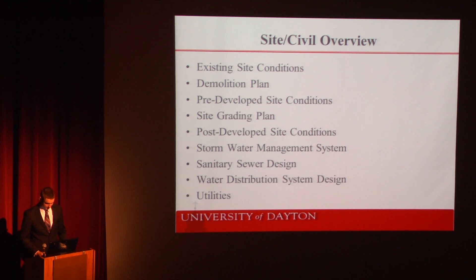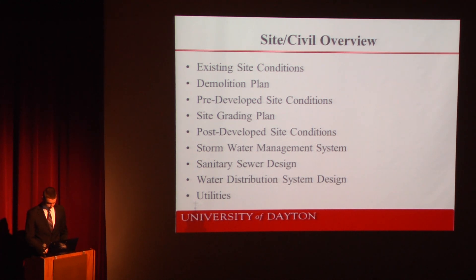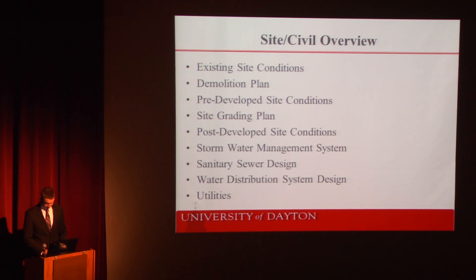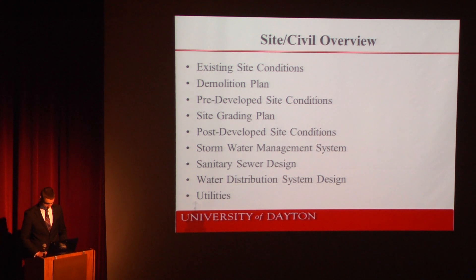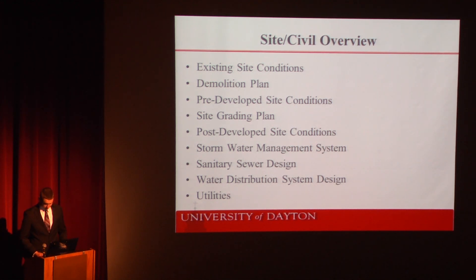The site civil team is responsible for aspects of the project that have to do with site development. We're responsible for examining the site conditions and determining the work needed. A demolition plan evaluates structures that need to be removed and relocated. Pre-developed site conditions are evaluated to determine initial rainfall runoff from a given storm event. Site grading allows proper drainage of the site and determines the amount of soil that must be moved on or off site. Post-developed conditions are evaluated to see the change in rainfall runoff. Stormwater management ensures post-developed rainfall runoff conditions match pre-developed conditions. Sanitary sewer consists of moving wastewater off site to a treatment facility. Utilities include water pipes, sanitary sewer pipes, stormwater pipes, natural gas lines, electric connections, and communications required for the site.